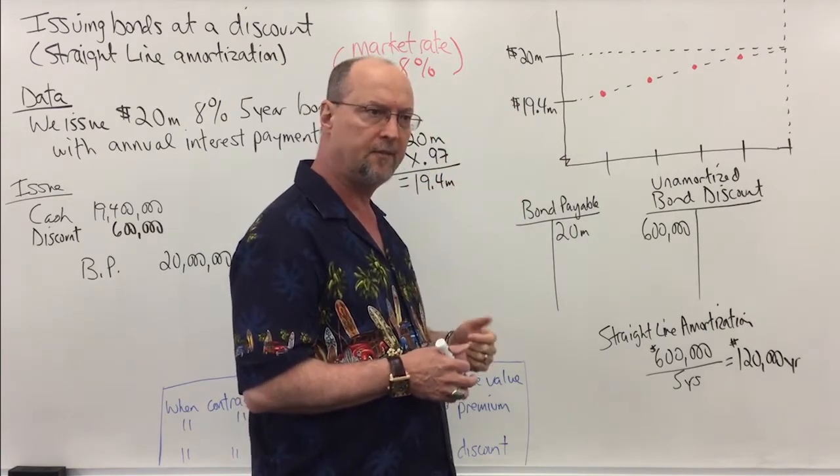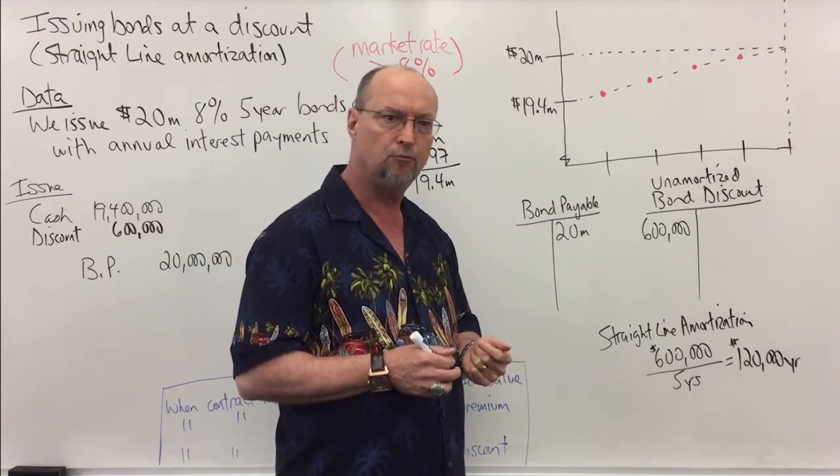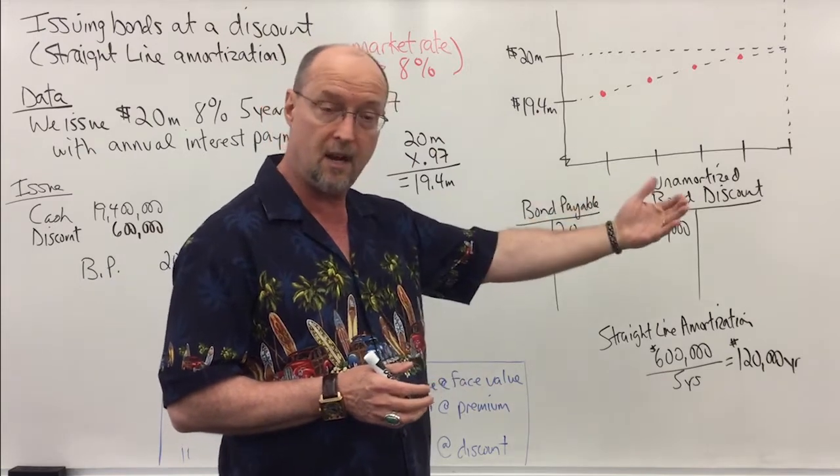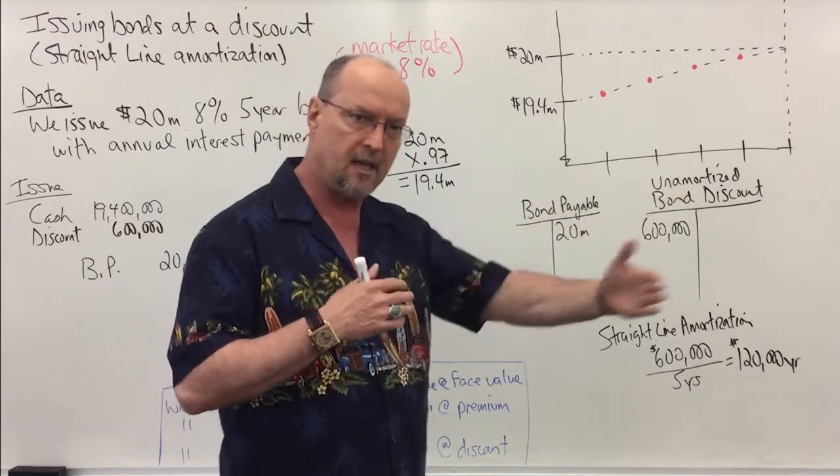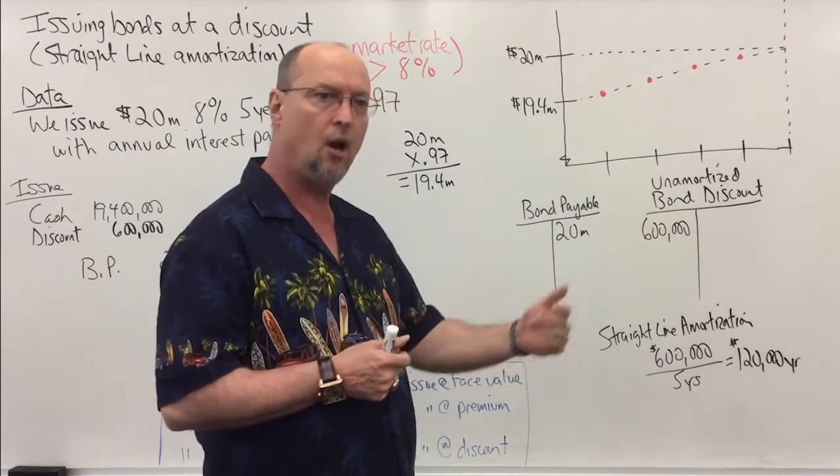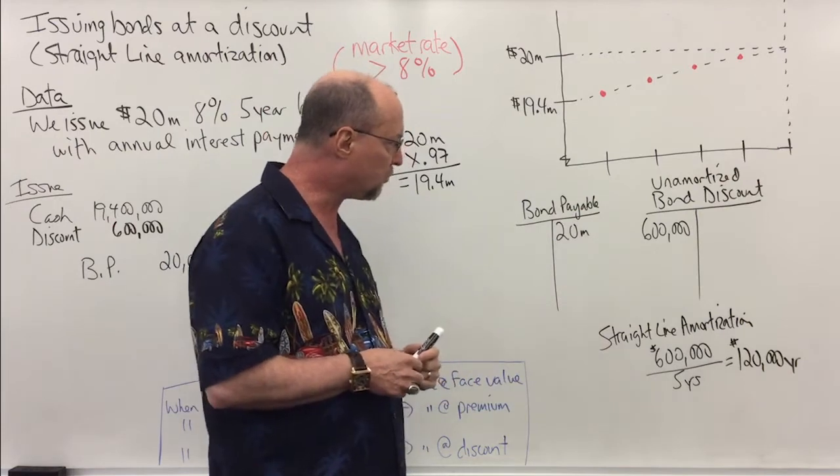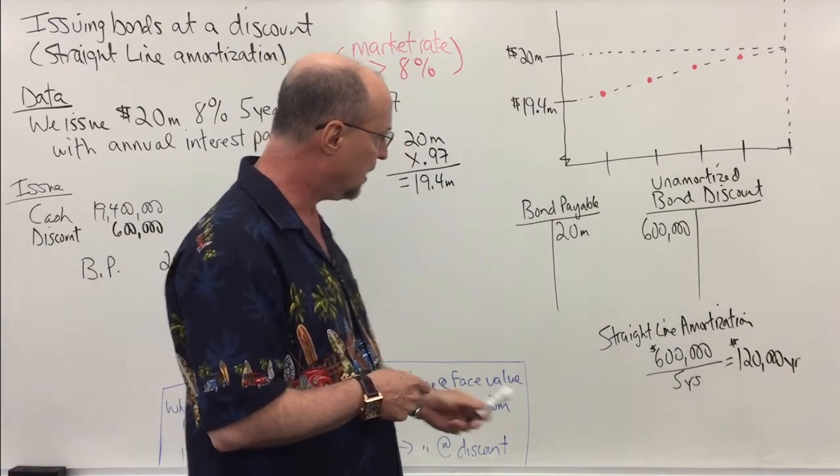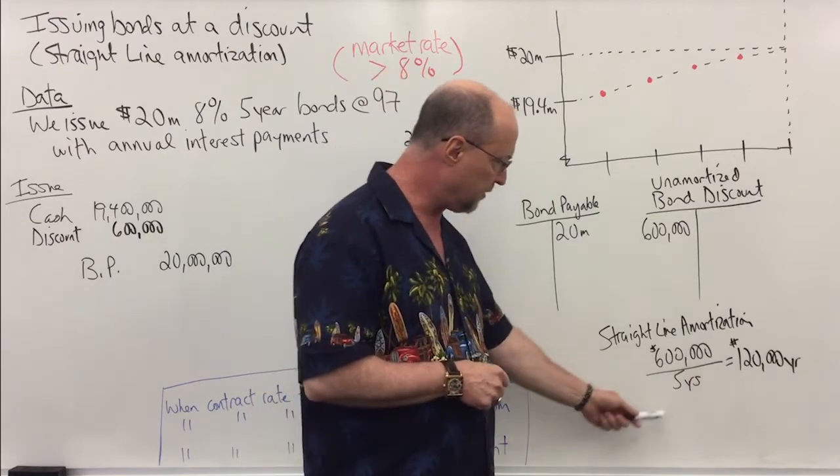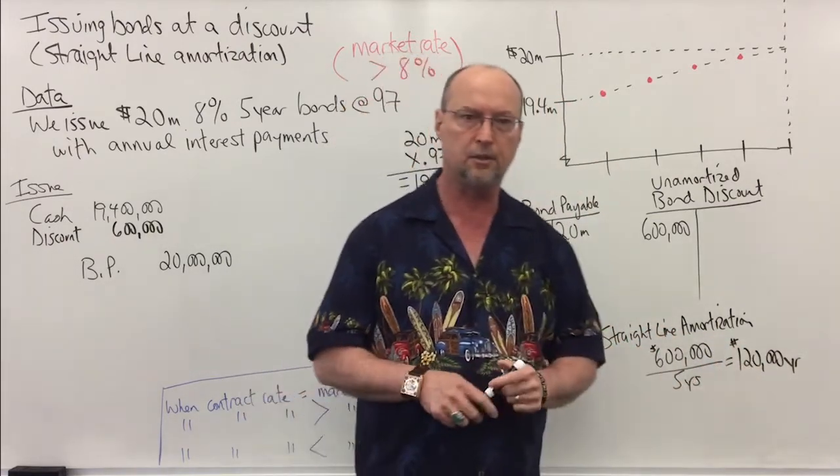So we received $19.4 million but we have to pay back $20 million, so we have to pay back $600,000 more than we received. Rather than expense that $600,000 in year one or the end of year five, we're going to amortize it, which is the same as depreciation. We're going to spread it out and allocate it over the five years that we benefit from the bonds. Now using straight-line amortization, our discount is $600,000, we divide it by five years, and we're going to amortize $120,000 per year.